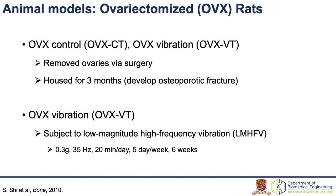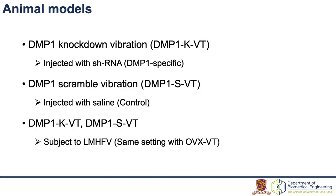In this study, ovariectomized rats were used as the animal model, and four different groups were developed. First, OVX control and OVX vibration — osteoporotic fractures were induced via ovary removal. For OVX vibration, the rats were subjected to vibrations. For the DMP1 knockdown vibration group, rats were injected with shRNA, which is DMP1-specific for gene silencing. And the DMP1 scramble vibration group was injected with scramble siRNA as a control group. Both DMP1 knockdown and scramble groups were applied with vibrations.